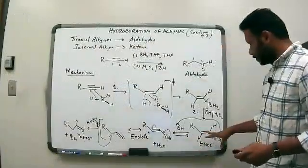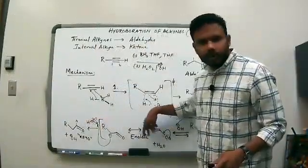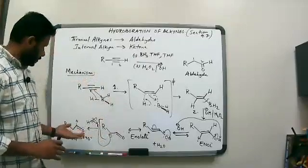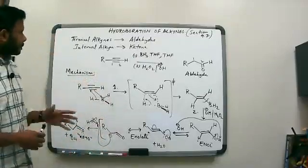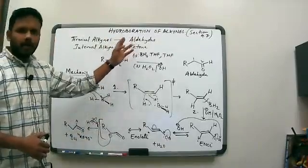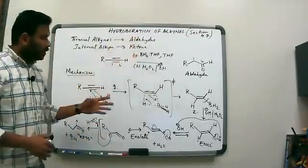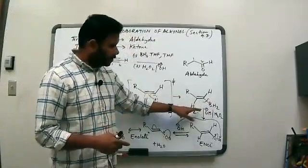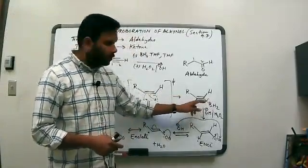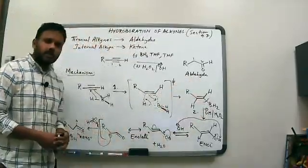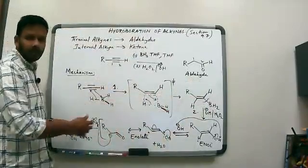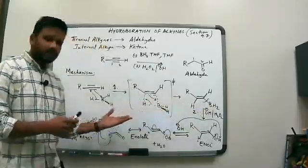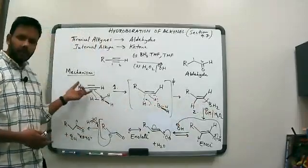We're looking at enol going to keto under basic conditions, and we've seen enol going to keto under acidic conditions in the hydration example. That's the mechanism of hydroboration oxidation of alkynes. We skipped part of the mechanism — the details of how boron is replaced by the hydroxyl group — but it shows why boron goes to the less substituted carbon, which is identical to the alkene case due to sterics.